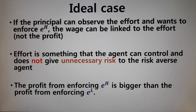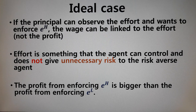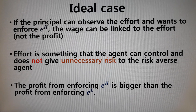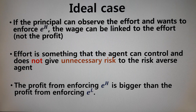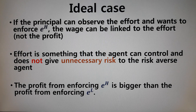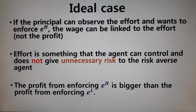Welcome to lecture 36 of the game theory course. This is the last lecture of week 12. In the previous lecture, we calculated the wage levels and profit for the ideal case where the principal can observe the effort level of the agent — meaning EH and EL.